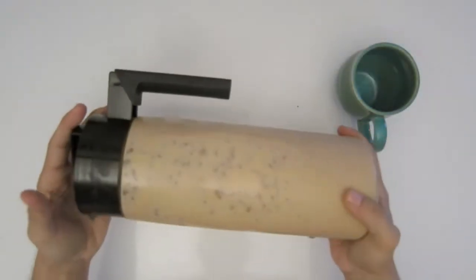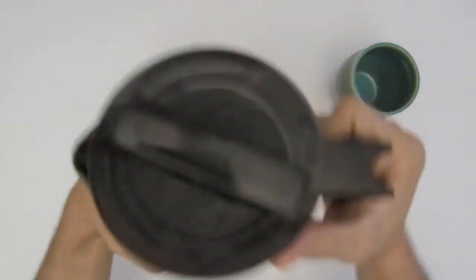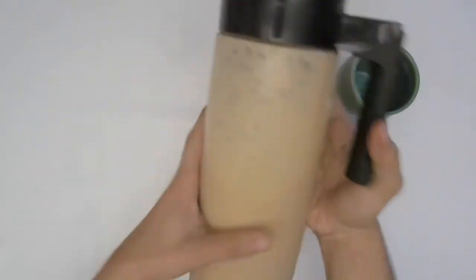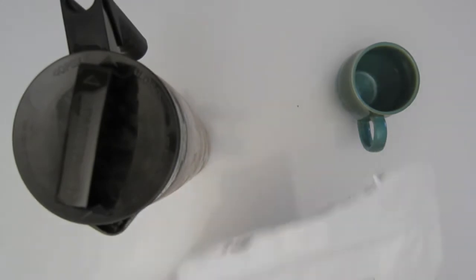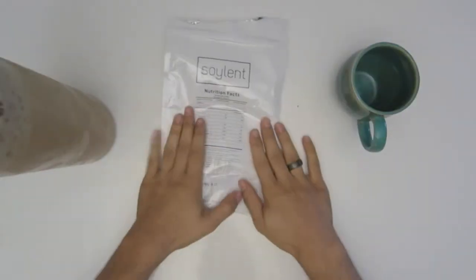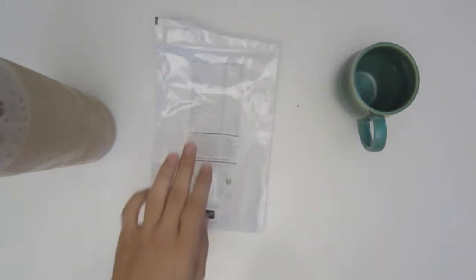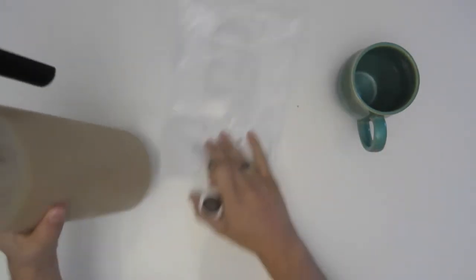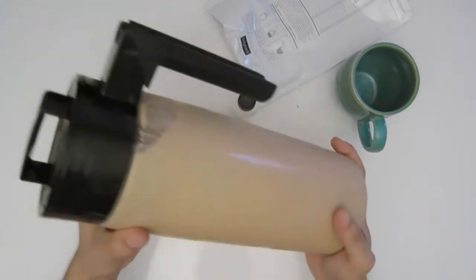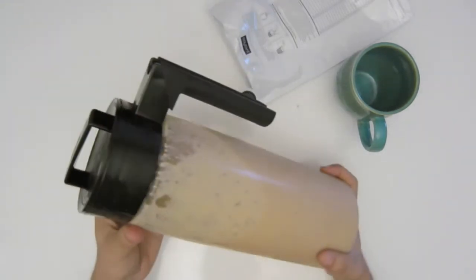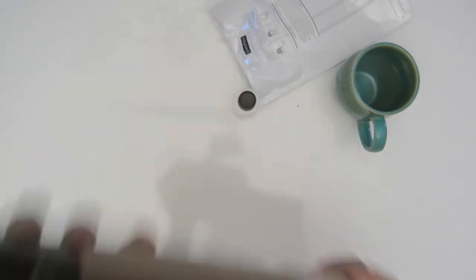Alright, so here we are back with Soylent. It has arrived. Give it a good shake. So basically this is one full packet of the Soylent mix and the oil blend, and you dump both of those into this pitcher and then you fill it pretty much to the top with water and then shake.